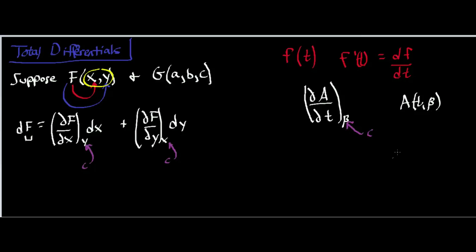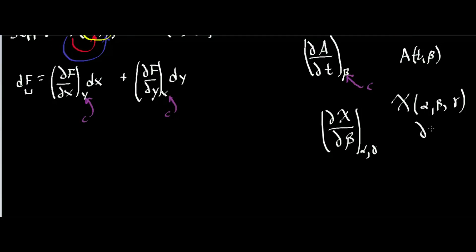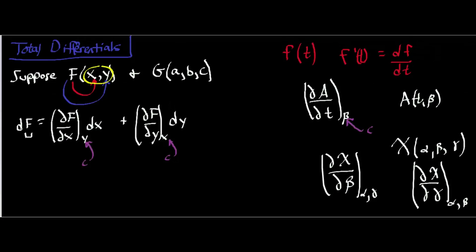Let's look at a slightly different example. Suppose I have a function chi, and chi is a function of alpha, beta, and gamma. If I wanted to take the partial derivative of chi with respect to beta, I can't just hold alpha constant — I have to hold gamma constant as well. So I'm changing beta to see how chi changes, and I hold alpha constant with a comma and then gamma. If you have a function of three variables and take a partial derivative with respect to one, you hold the other two constant. Likewise, if I take the partial of chi with respect to gamma, I hold alpha and beta constant. That's how you write partial derivatives when you have more than two independent variables.